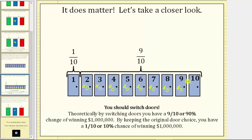Which means once again you should switch doors. Theoretically, by switching doors you have a nine-tenths, or 90%, chance of winning one million dollars. By keeping the original choice, you have a one-tenth, or 10%, chance of winning one million dollars.